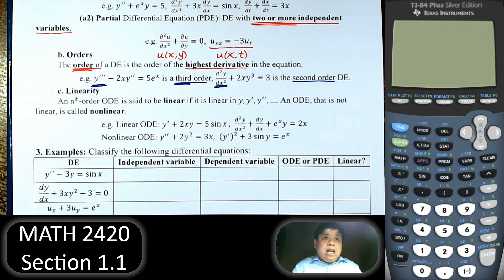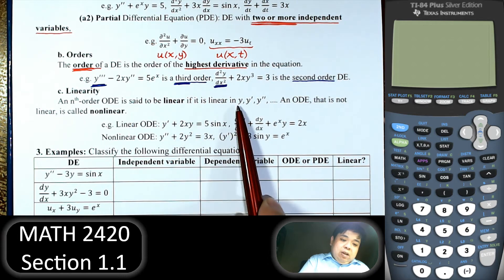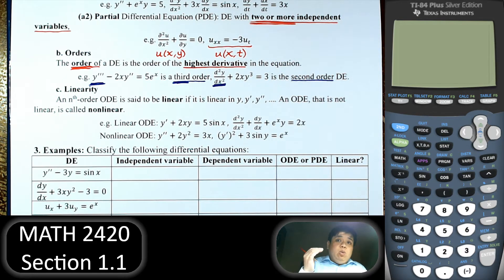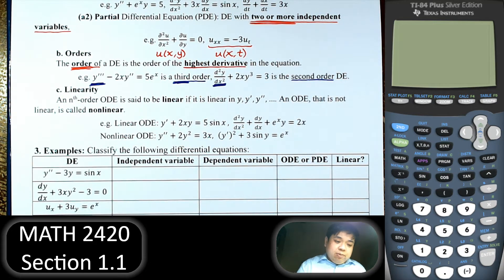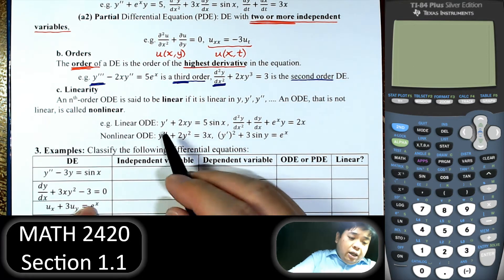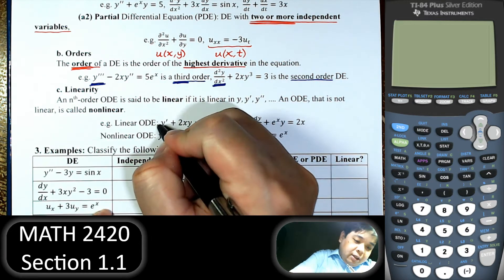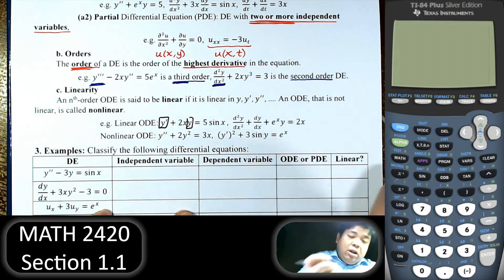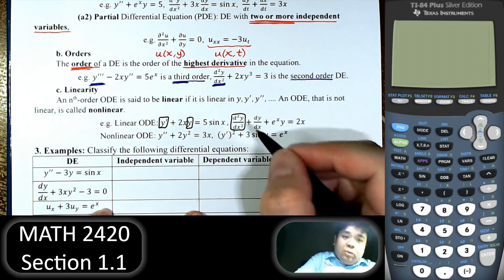Next we can classify the equation as linear or nonlinear. An nth order ordinary differential equation is said to be linear if we only have y, y prime, y double prime — meaning we may have a bunch of derivatives or a function, but it cannot be raised to any power or any function applied to it. Let's focus on y, the dependent variable, and its derivatives. So here we have y prime and y — that's it, so this is linear. Now we have the second derivative and the first derivative and the function.